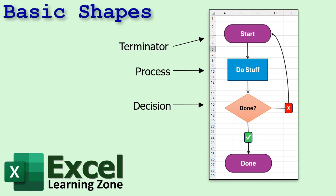The basic shapes in most flowcharts: you've got the terminator, which is like the start or end of a process; you've got a process step itself; and then you've got a decision. As you can see, we've got a terminator to start it, a process to do some stuff, a decision asking 'are you done?', and then it ends with another terminator.